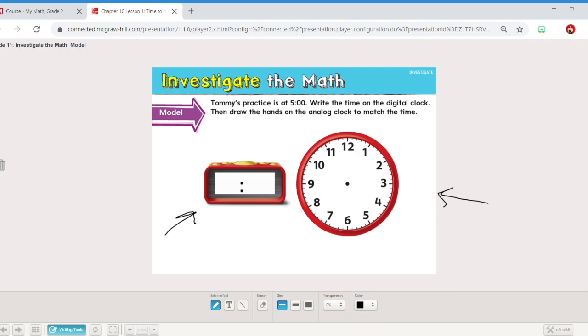Tommy's practice is at five o'clock. Write the time on the digital clock then draw the hands on the analog clock to match. Well I know that on a digital clock the hour goes first. So I'm going to put five here and five o'clock. They even gave it to us right here. There are two zeros. As we were talking about before, sometimes I start with my short hand first. It's pointing to the hour. I'm going to try very carefully to get it to point exactly to the five. And my long hand I'm going to try to get very carefully point exactly to the twelve. There you have it. Five o'clock digitally. Five o'clock on an analog.